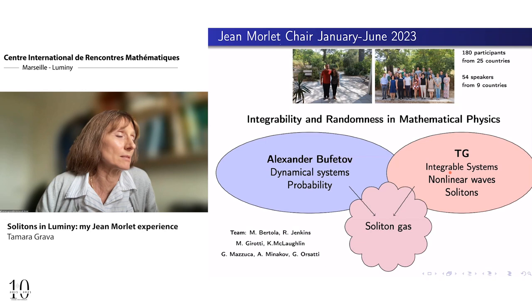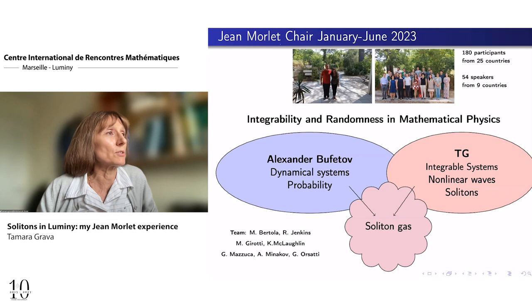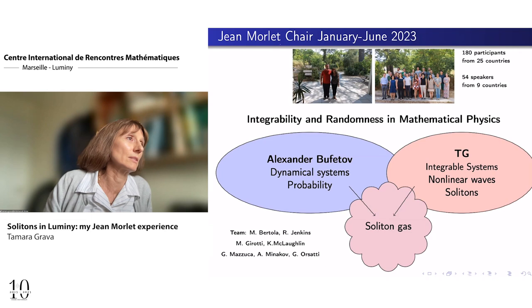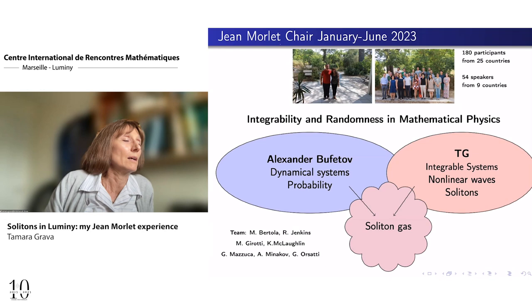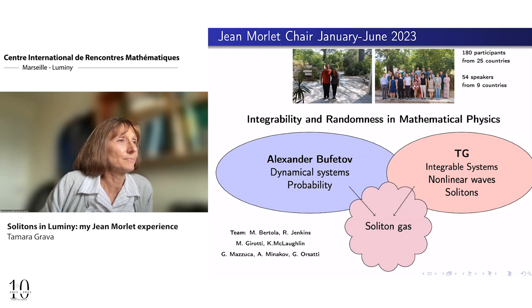Here I have a picture with him, and here is the picture of the last activity that we organized, the workshop. So each Jean Morlet activity has a school, a workshop and a conference, and this is the school. During this activity, there was the chance to have a lot of visitors and participants. I count 180 participants among junior and more senior faculty, and they came from 25 countries. And we have 54 speakers from nine countries.